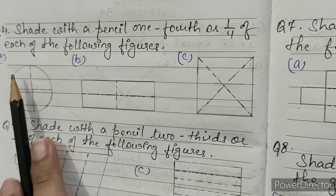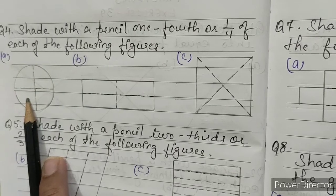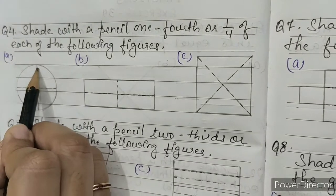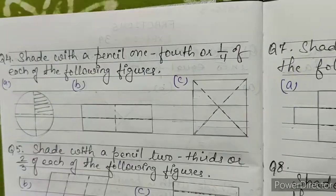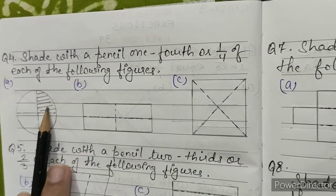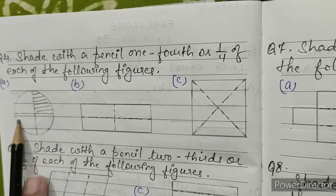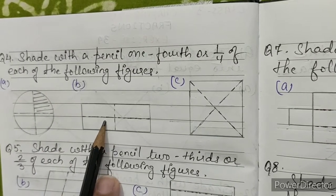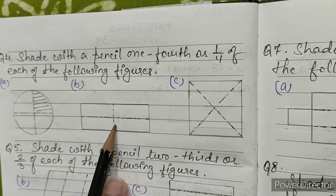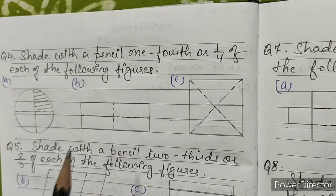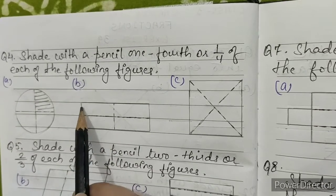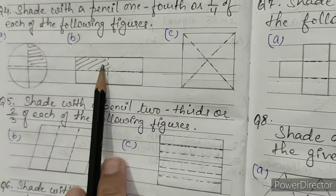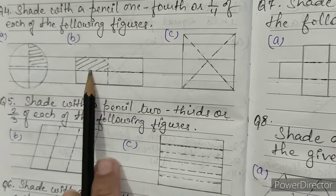Question number 4: shade one fourth of each figure. This shaded part is one fourth of the figure. B: this figure is also divided into 4 equal parts; we have to shade any one part. This shaded part is one fourth of the figure.